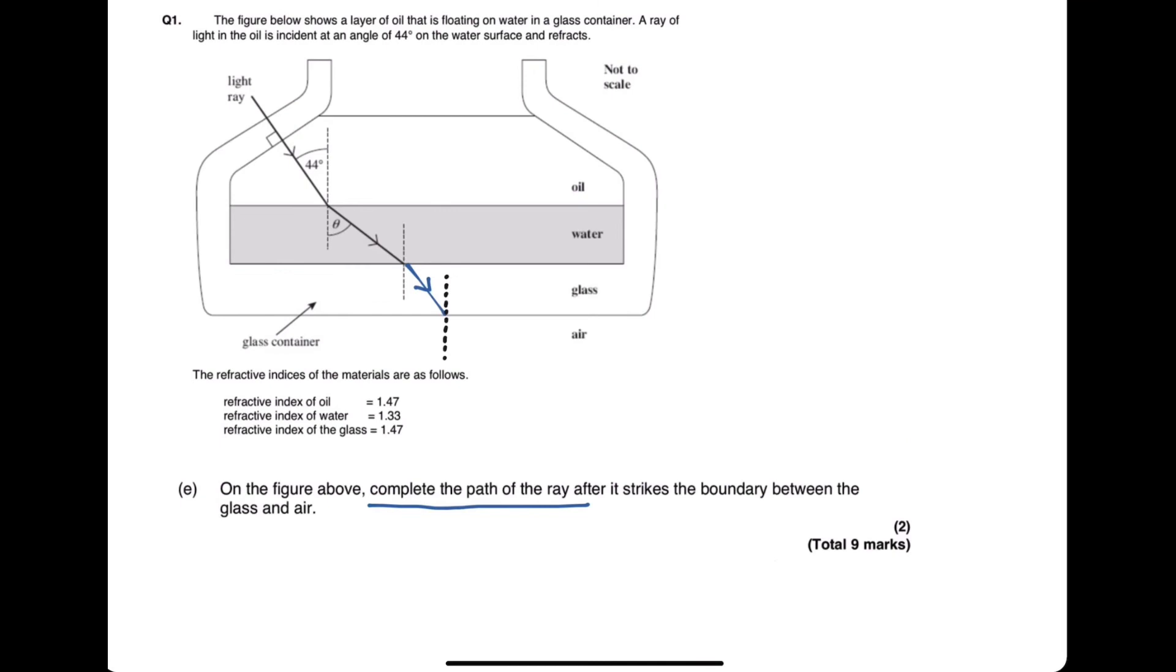For the final part of this question we are asked to complete the path of the ray after it strikes the boundary between the glass and air. So we need to determine whether we're actually going to get total internal reflection happening here. And to do that we need to think about what our angle of incidence is between the glass entering the air. So we can figure out using opposite angles that that is going to be 44 degrees. And 44 degrees is greater than the critical angle of 43 degrees. So that means total internal reflection will occur.